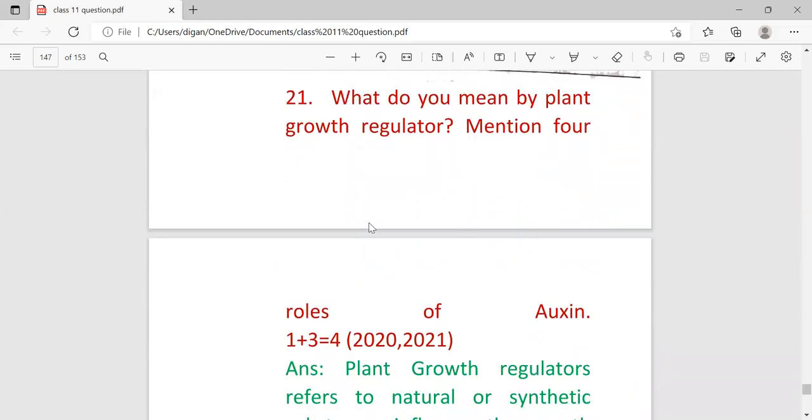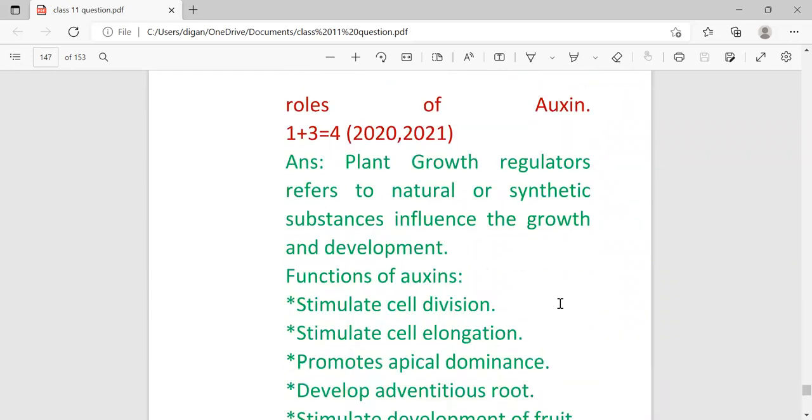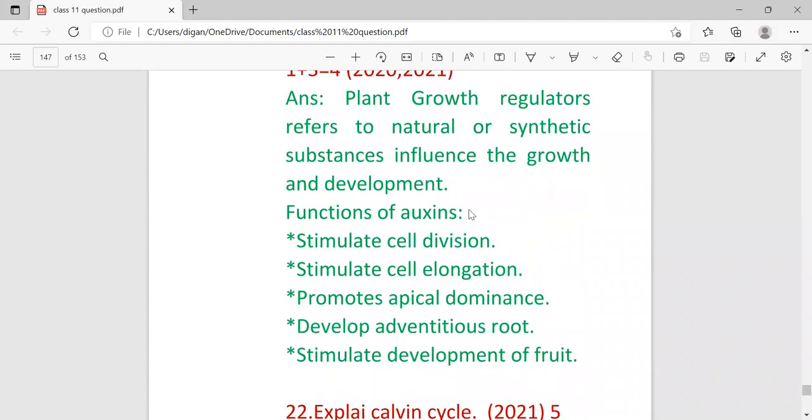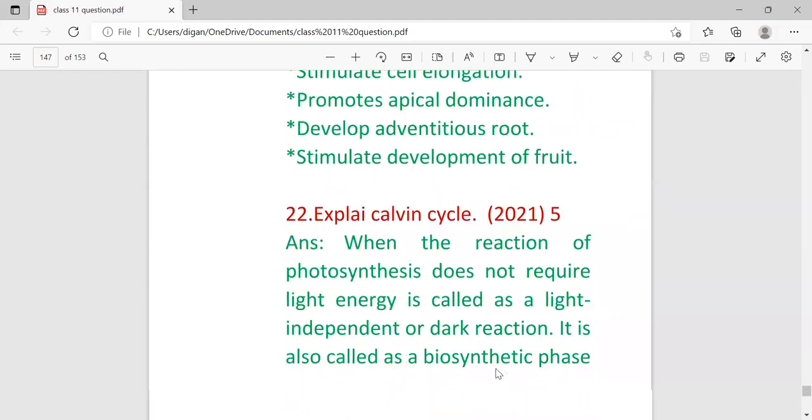What do you mean by plant growth regulator and mention four roles of auxin? Continuously repeated in 2020 and 2021. Plant growth regulators refer to natural or synthetic substances that influence the growth and development. In another term, you can use the plant hormone in place of plant growth regulator. The functions of auxins are: stimulate cell division, stimulate cell elongation, promote apical dominance, develop adventitious fruit, and stimulate the development of fruit.